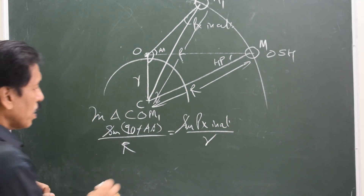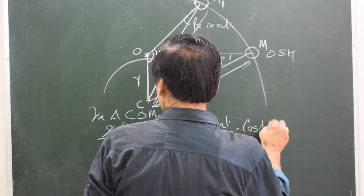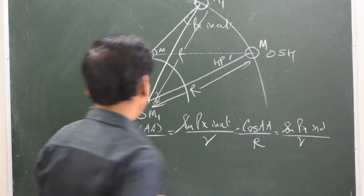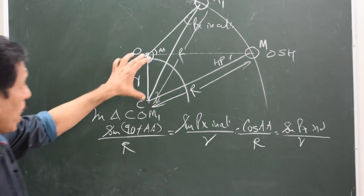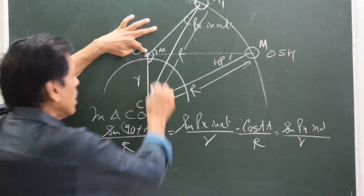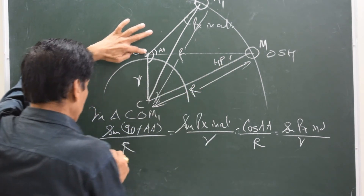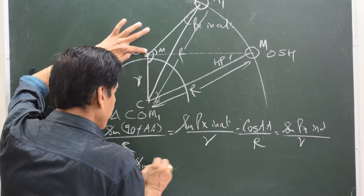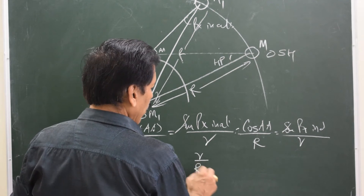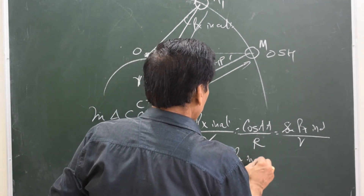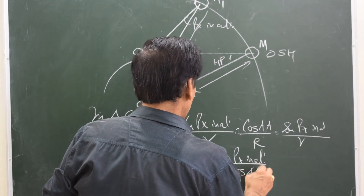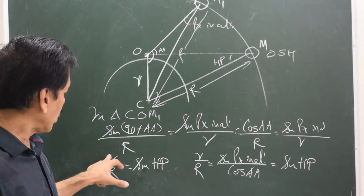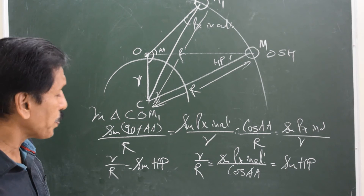So sine (90 + apparent altitude) becomes cosine, giving us: cosine of apparent altitude divided by R equals sine of parallax in altitude divided by small r. Now looking at this right-angle triangle, small r divided by capital R equals opposite upon hypotenuse for horizontal parallax, so that is sine of HP. Making the adjustments: small r upon capital R equals sine of parallax in altitude divided by cosine of apparent altitude. But small r upon capital R also equals sine HP. Therefore sine HP equals sine of parallax in altitude divided by cosine of apparent altitude.